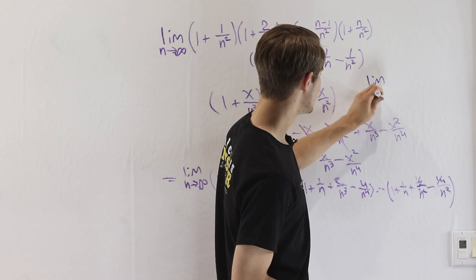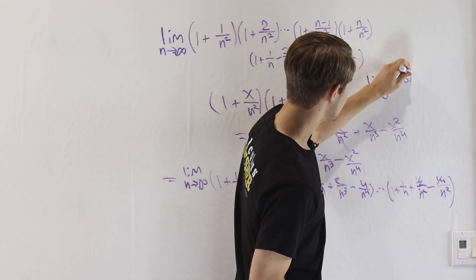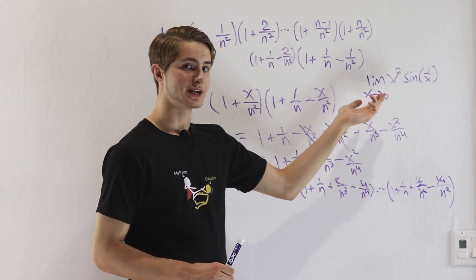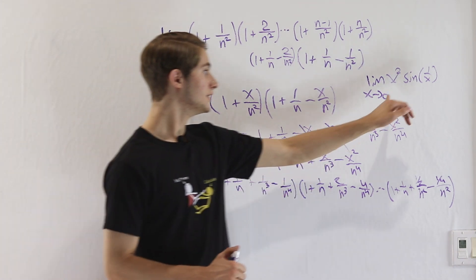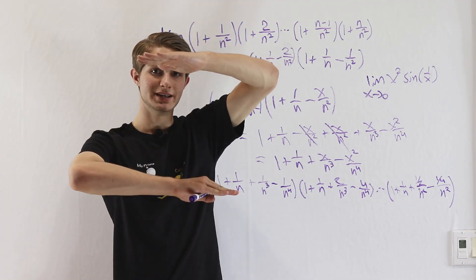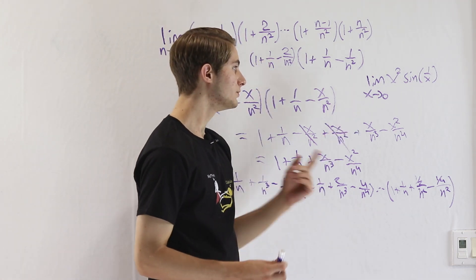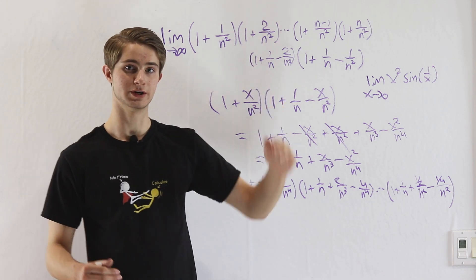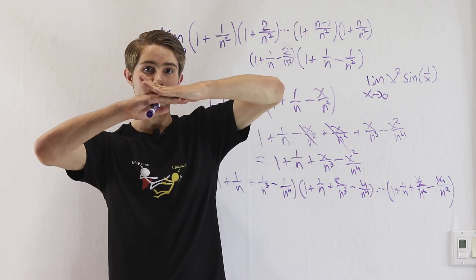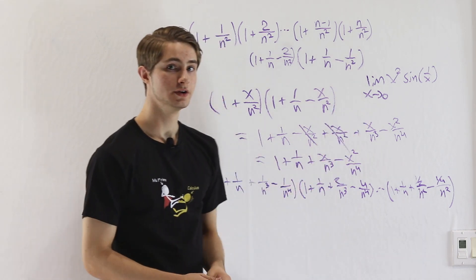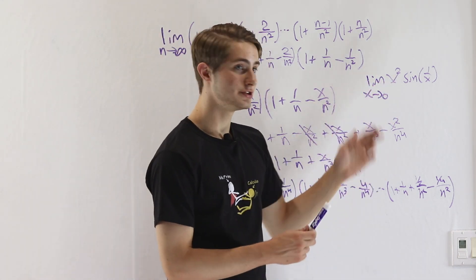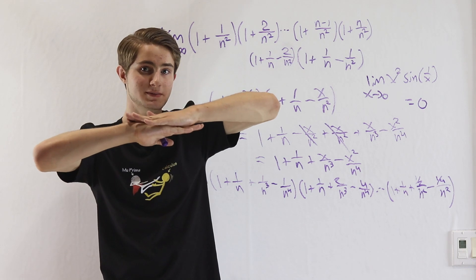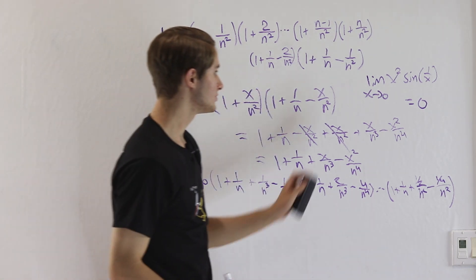For example, to find the limit as x approaches 0 of x squared sine 1 over x, we can say sine of 1 over x is always between negative 1 and 1. So this limit will always be between the limit of negative x squared and positive x squared as x approaches 0. Both bounds meet at 0, so without evaluating it directly, we can say this has to equal 0 because the upper and lower bounds meet at the same place.